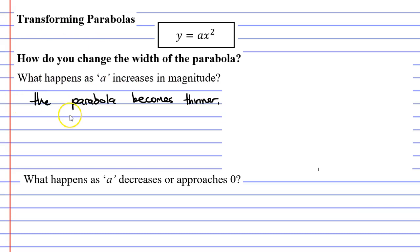The next question we're going to ask ourselves is what happens as a decreases? We know it becomes thinner as it increases. So I reckon as it decreases, it's going to become wider. And when we talk about decreasing, meaning it's approaching zero, becoming really small, becoming a decimal.